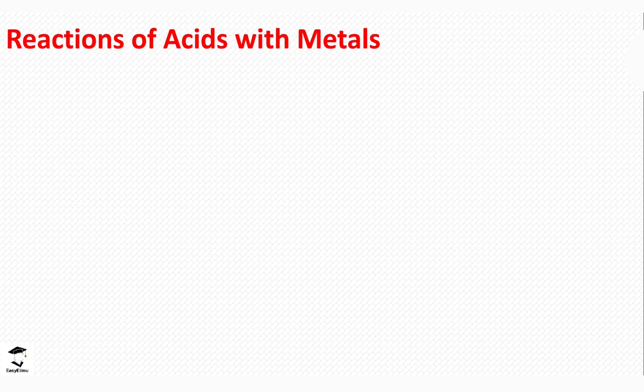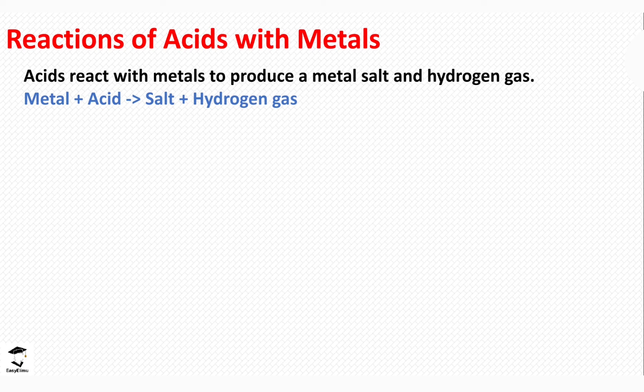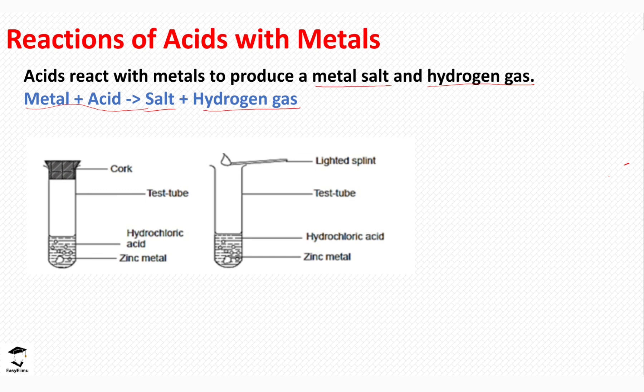Now we will look at the chemical properties of acids. One chemical property is the reaction of acids with metals. Acids usually react with metals to produce a metal salt and hydrogen gas. This will come up again when we prepare hydrogen gas in the laboratory. In general: metal + acid → salt + hydrogen gas, as shown in the general equation.